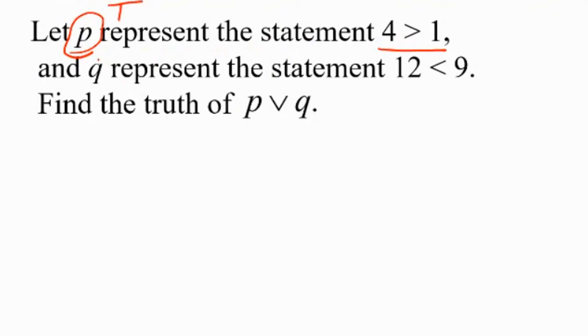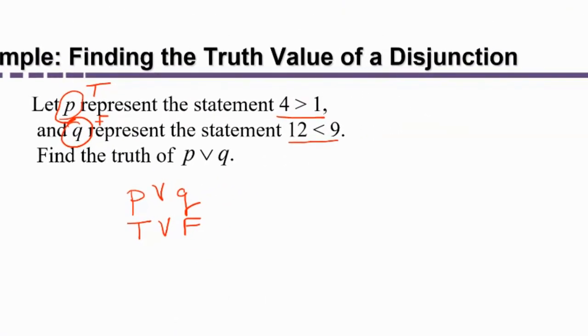Then I'd look at Q and determine its truth value. Twelve is not less than nine. So that's false. So then I would write down P or Q and I would put true or false, replacing each component with its truth value. And then I would use my rule for an or statement. What's the rule for or again? It's easy to confuse the symbols at first. Here's something that might help.